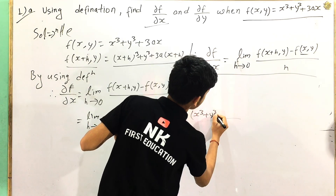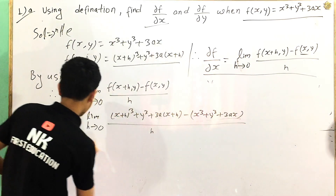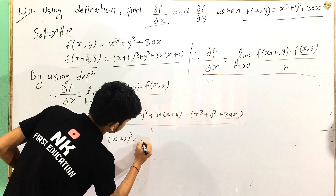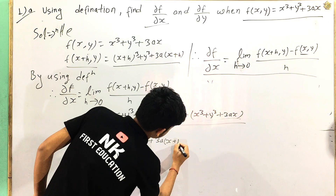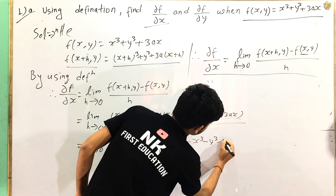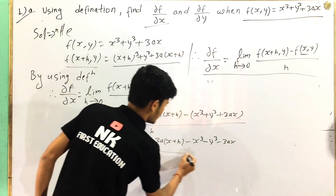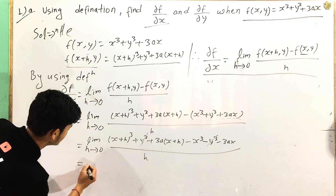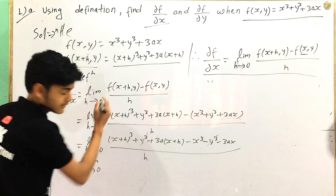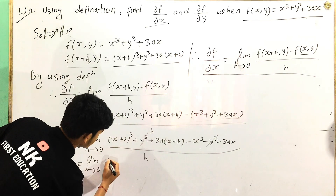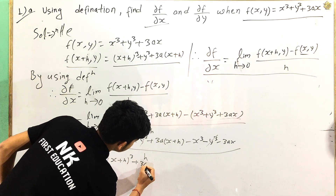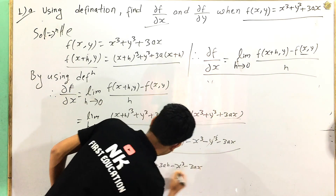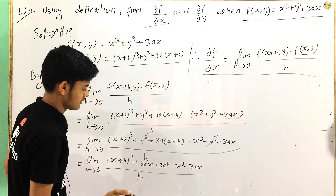Minus [x cube plus y cube plus 3ax], all divided by h. Then expanding: (x plus h) cube plus y cube plus 3a(x plus h) minus x cube minus y cube minus 3ax, divided by h. The 3ax and minus 3ax cancel, and we expand (x plus h) cube.